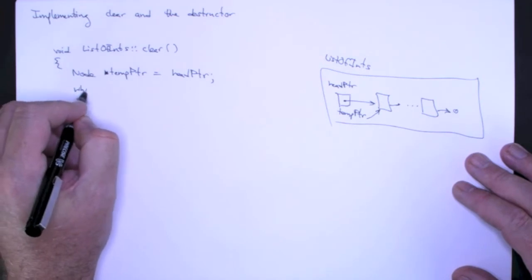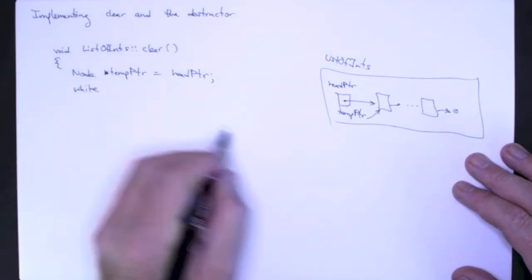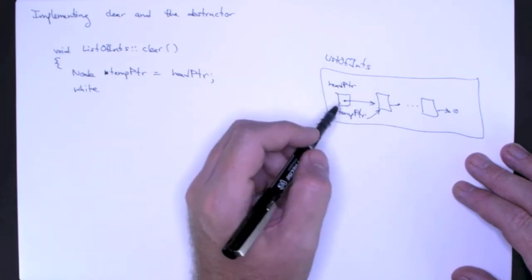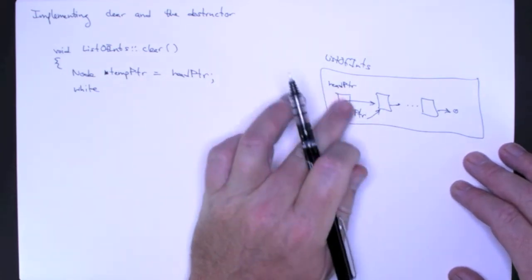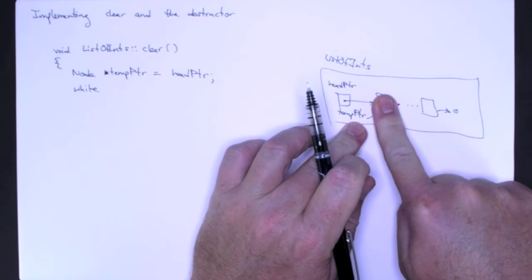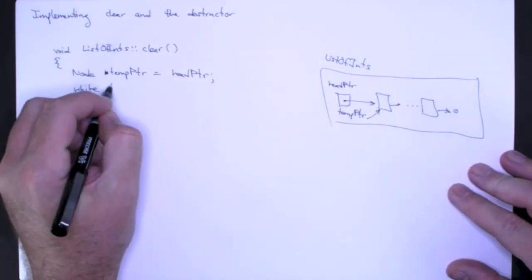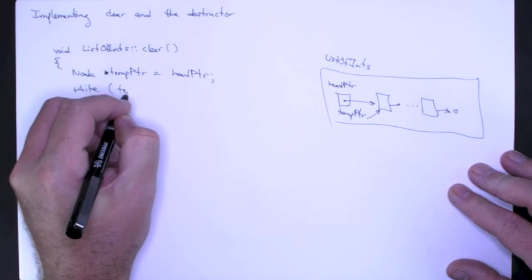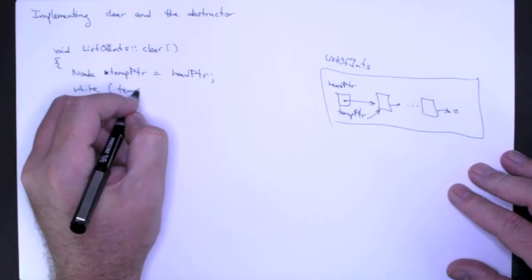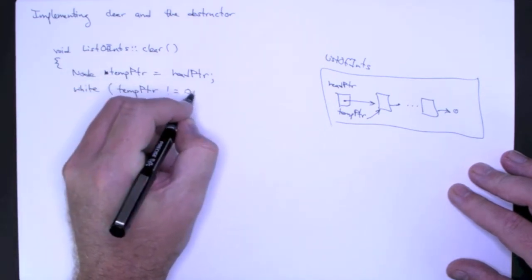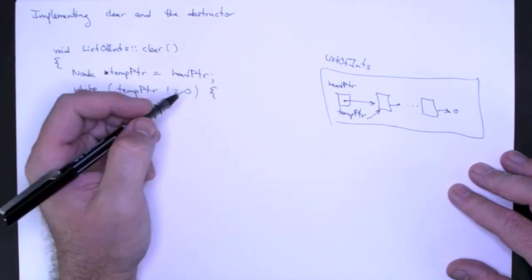So now remember that there's an order of operations here. I can't call delete because if I do, then I delete that node and I can't get to the rest of the list. I'm going to use temp pointer for my traversal, and as long as temp pointer is not equal to null, then I want to continue to iterate.